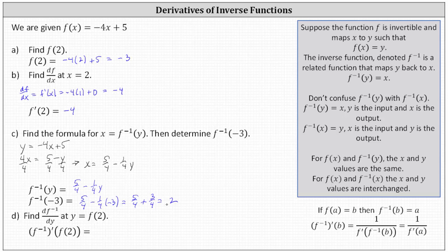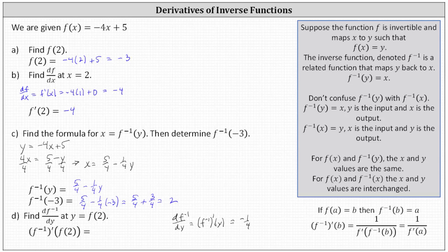Finally, for part d, we're asked to determine df inverse dy at y equals f of two. Let's first determine df inverse dy, which is f inverse prime of y. We need to determine df inverse dy, which equals the derivative of five-fourths minus one-fourth y with respect to y — not with respect to x — which gives us zero minus one-fourth times one, or negative one-fourth. Notice regardless of the input y, the output of the derivative function is negative one-fourth.